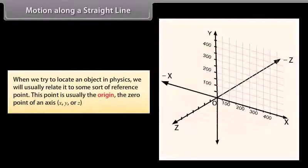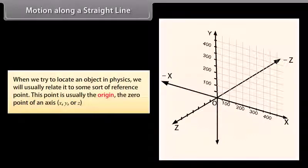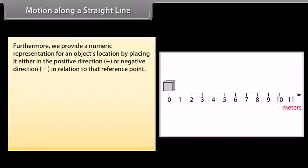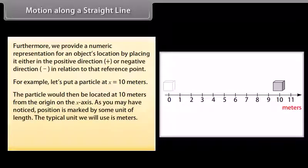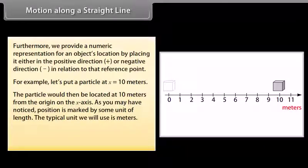When we try to locate an object in physics, we will usually relate it to some sort of reference point. This point is usually the origin — the zero point of an axis: X, Y, or Z. We provide a numeric representation for an object's location by placing it either in the positive direction or negative direction in relation to that reference point. For example, let's put a particle at X equal to 10 meters. The particle would then be located at 10 meters from the origin on the X axis. Position is marked by some unit of length; the typical unit we will use is meters.